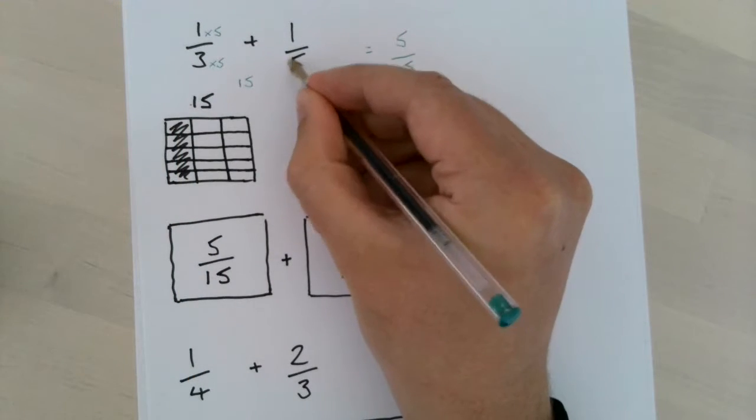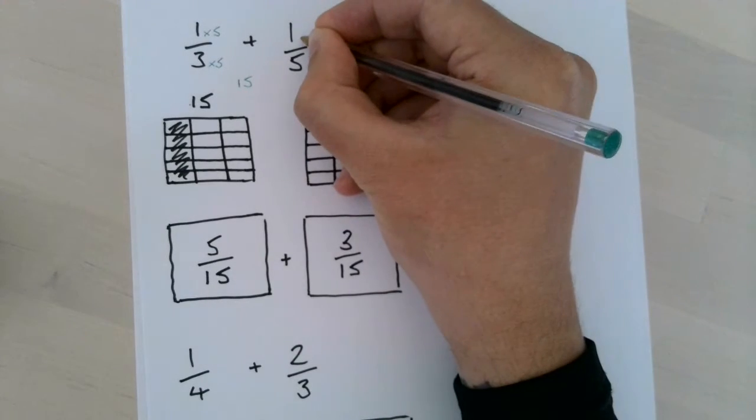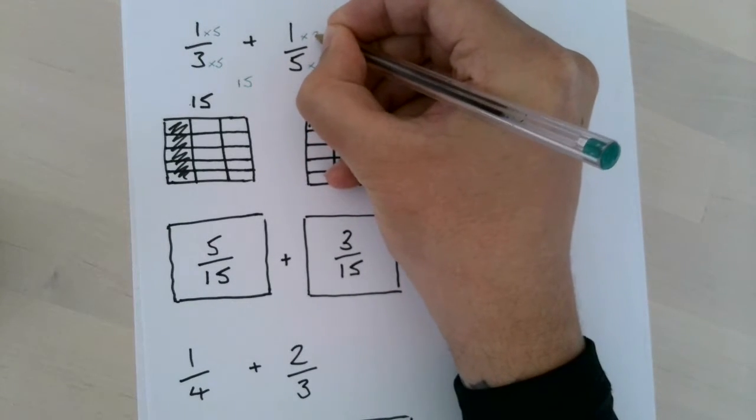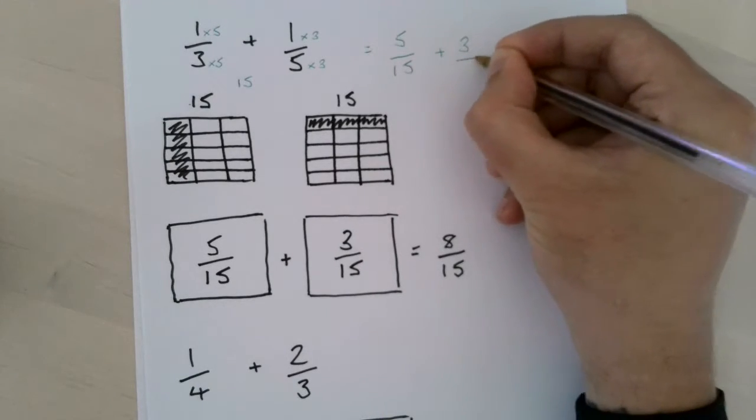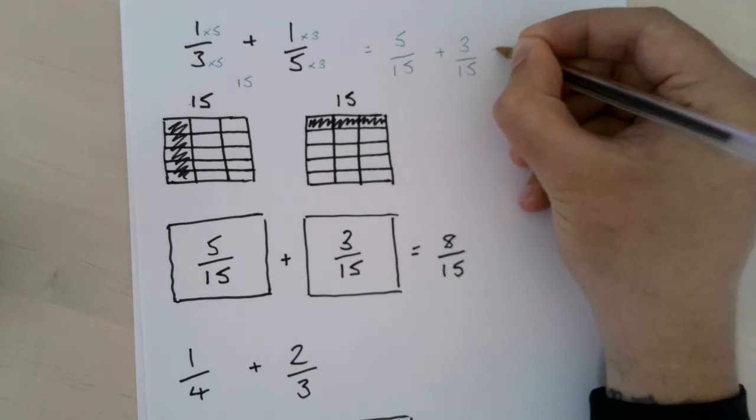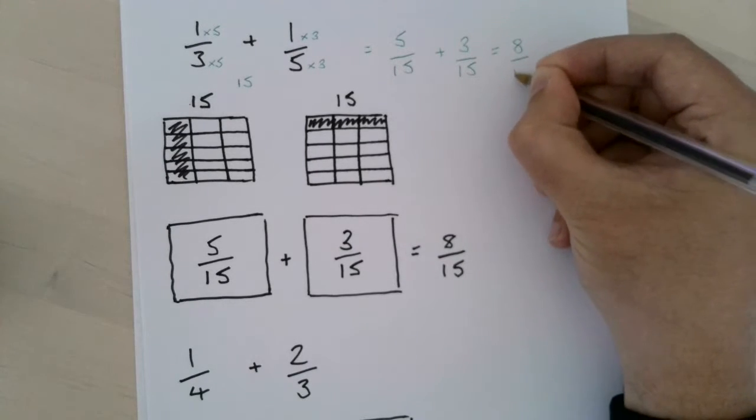What I do to the denominator to make it 15 is multiply it by 3, so do the same to the numerator, multiply it by 3, which is 3 fifteenths. Again, it takes us to the same answer of 8 over 15.